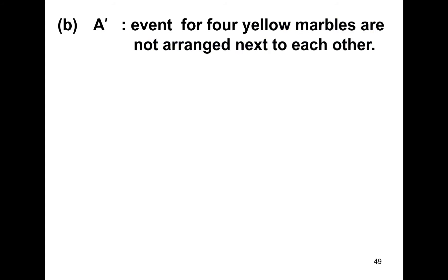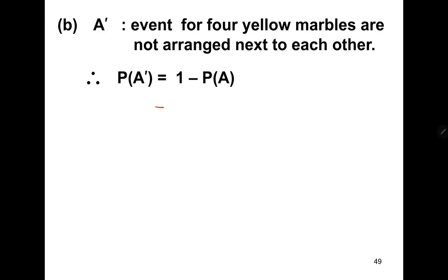For A-complement, the event that the four yellow marbles are NOT arranged next to each other, the probability of A-complement equals 1 minus the probability of A. So we have 1 minus 1 over 21, which gives us 20 over 21.